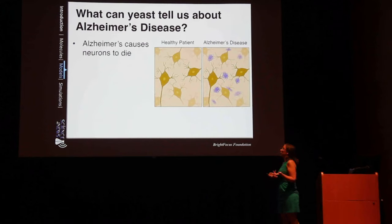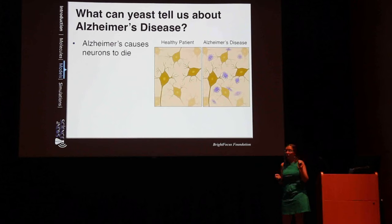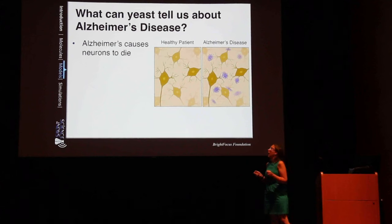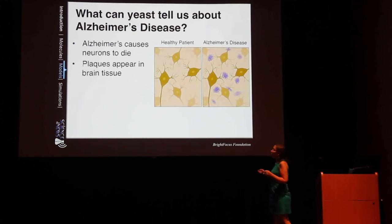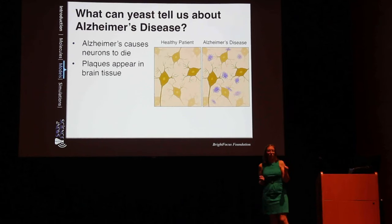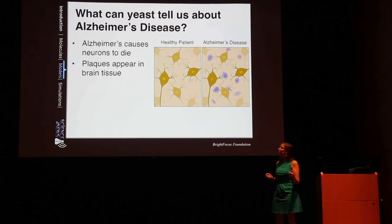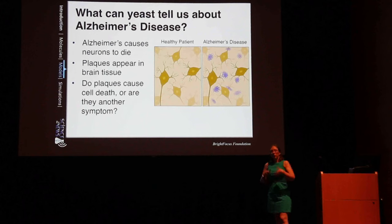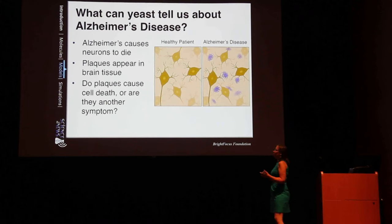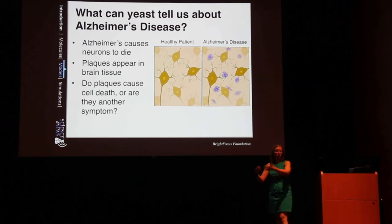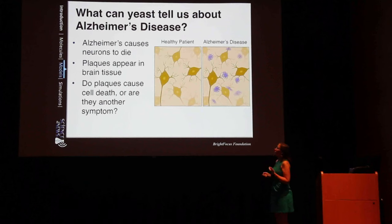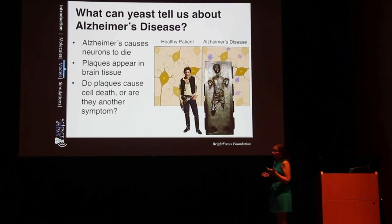Obviously yeast do not have brains — they are individual single-celled organisms. But we know that Alzheimer's causes neurons to die, and we know that plaques — these clumps of protein — appear in the brain tissue as Alzheimer's progresses. We didn't know at the beginning whether the plaques are actually causing neurons to die, or if they just arise over the course of the disease and are unrelated to the brain cells dying. This is a question that people could use yeast to study.